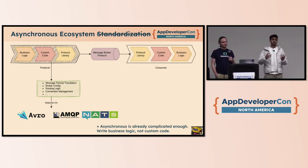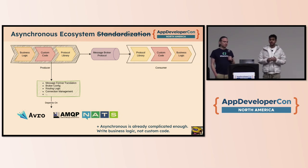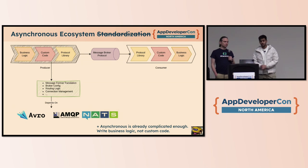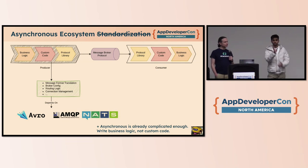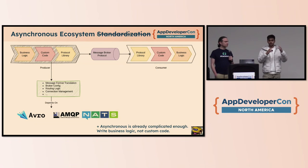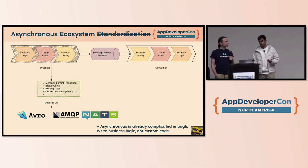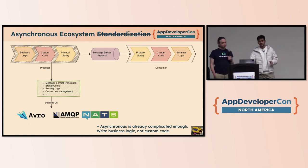There is no standardization in the asynchronous ecosystem. In any asynchronous system at a higher level, you have some business logic and a message broker. That message broker has a library in the language you're developing in, and then you write custom code for things like message format translation, broker config, and routing logic. This custom code exists on both the producer and consumer side. On the producer side, you put the message in the format expected by the protocol library and it goes through the message broker. On the consumer side, the protocol library parses the message, you pop it out using your custom code, and then your business logic runs. If you change your message broker, you might have to rewrite most of that custom code. Asynchronous is complicated enough — you shouldn't be writing custom code rather than focusing on business logic.